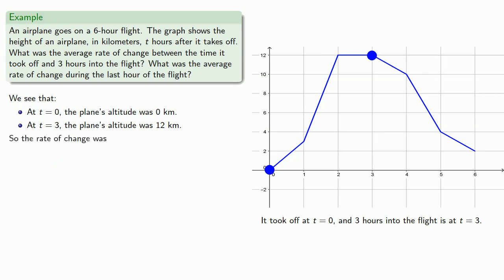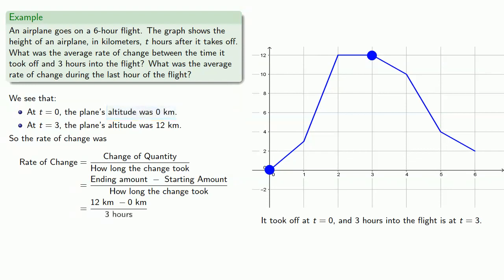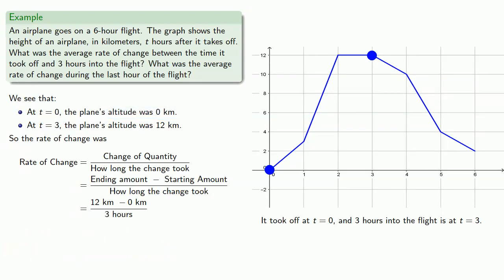The rate of change is the change in quantity divided by how long the change took. The change in quantity is the ending amount minus the starting amount. We ended at twelve kilometers and started at zero kilometers. That change took three hours. So our rate of change is twelve kilometers divided by three hours, or four kilometers per hour.